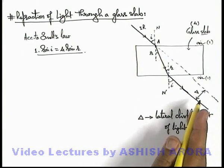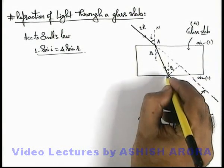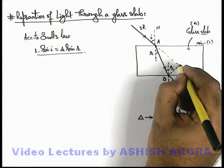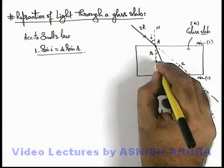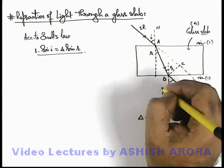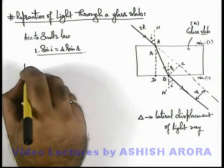If we wish to calculate the value of this lateral displacement, here we drop a perpendicular from this point we name it as B, and this point we consider as C. If we extend the normal it is meeting on the other surface at point D.